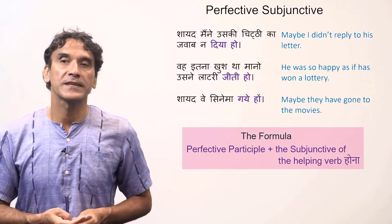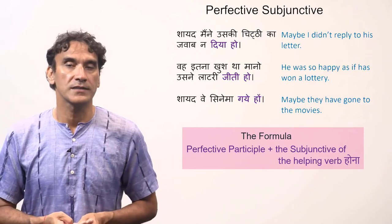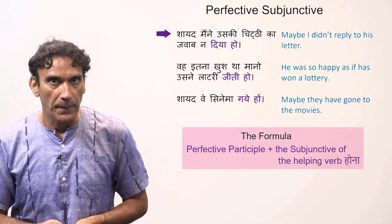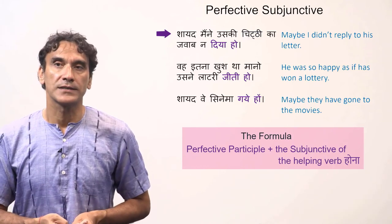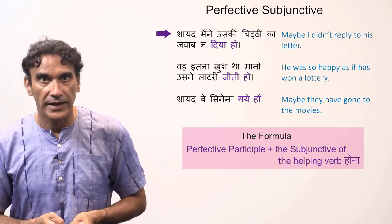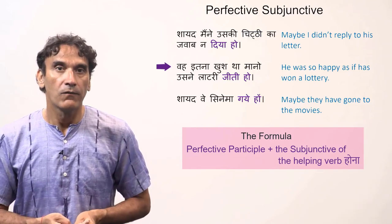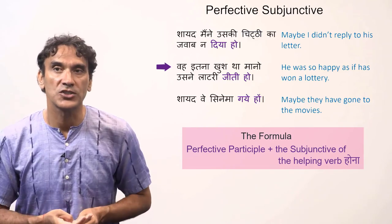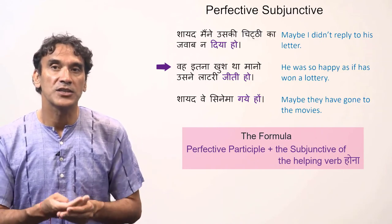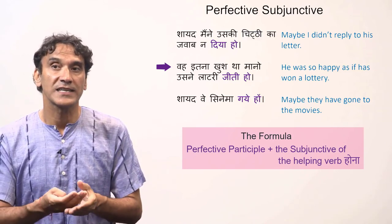Now the perfective subjunctive. The perfective subjunctive is made with the perfective participle and the helping verb 'hona' in the subjunctive. Example: 'shayad maine uski chitthi ka jawab na dia ho' — maybe I did not reply to his letter. Keep in mind that with a transitive verb, the subject takes the postposition 'ne' — here the verb is transitive 'dena', that's why the subject has 'ne': 'maine'. Another example: 'wo itna khush tha maano usne lottery jiti ho' — he was so happy as if he had won a lottery. Again, 'jitna' is transitive and 'lottery' is feminine, so it is 'jiti', and the subject takes 'ne'.